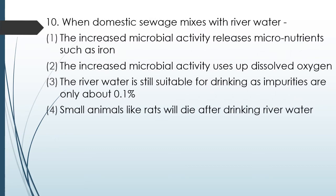Question No. 93: When domestic sewage mixes with river water — Option 1: The increased microbial activity increases micronutrients such as iron. Option 2: The increased microbial activity uses up dissolved oxygen. Option 3: The river water is still suitable for drinking as impurity is only about 0.1%. Option 4: Small animals like rats will die after drinking river water. The correct answer is Option 2 — the increased microbial activity uses up dissolved oxygen.